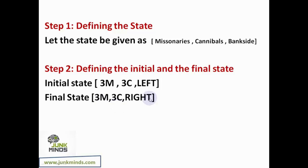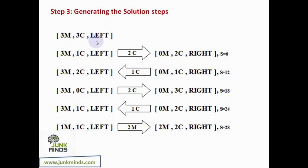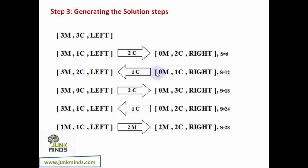Starting with three missionaries and three cannibals on the left, step one: two cannibals cross to the right — left has three missionaries and one cannibal, right has two cannibals. Since the number of cannibals changed, the score is six. Step two: one cannibal returns — left has three missionaries and two cannibals, right has one cannibal. Cannibals changed again, score becomes twelve.